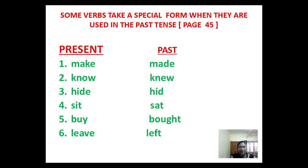Make (M-A-K-E). Past tense: Made (M-A-D-E). Know (K-N-O-W). Past tense: Knew (K-N-E-W). Hide (H-I-D-E). Past tense: Hid (H-I-D). Sit (S-I-T). Past tense: Sat (S-A-T). Buy (B-U-Y). Past tense: Bought (B-O-U-G-H-T). Leave (L-E-A-V-E). Past tense: Left (L-E-F-T).